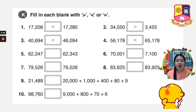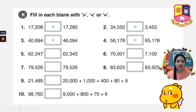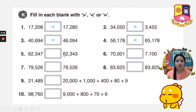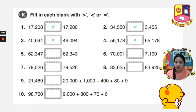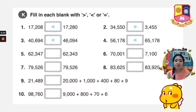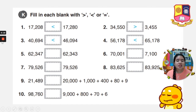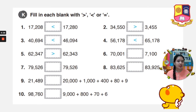Number 5. We have 62,347 and 62,343. Let's compare: 6 and 6, the same; 2 and 2, the same; 3 and 3, the same; 4 and 4, still the same; 7 and 3 — which one is bigger? That is 7, so the mouth is at 62,347.